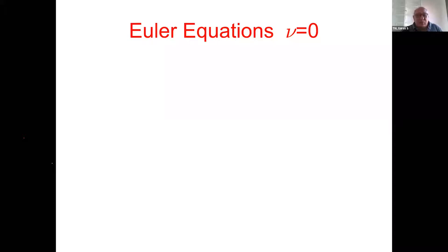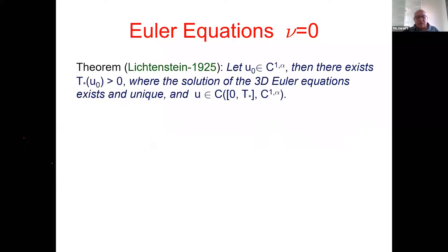Moving quickly to landmarks: for the Euler equation (viscosity zero), the classical work of Lichtenstein says that if the initial data is in C^{1,α}, there exists a short-time solution remaining in C^{1,α} — so you have well-posedness in that space. We have also heard in a recent video tutorial by Tariq El-Ghindi showing solutions starting in C^{0,α} for small α that develop singularity in finite time.